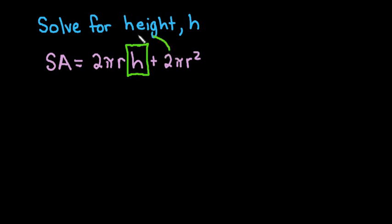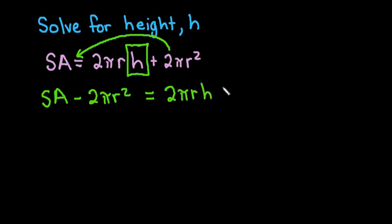So I'm going to take this 2 pi r squared and I'm going to move it to the other side by doing the opposite. So the opposite of adding 2 pi r squared is subtracting, so I'm going to subtract 2 pi r squared from both sides. And then I'm left with 2 pi r times h.